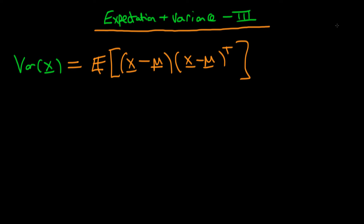Now the dimensions match up because we have an m by 1 vector times a 1 by n vector, so the inner two indices cancel and we're left with an n by n matrix overall.